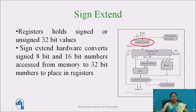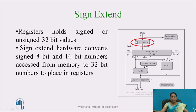There is a hardware block called sign extend. The registers hold 32-bit signed or unsigned values. Data accessed from memory can be 8-bit or 16-bit numbers, but the register capacity is 32 bits. So a conversion from 8-bit or 16-bit to 32-bit is needed, and that conversion is performed by the sign extend hardware.